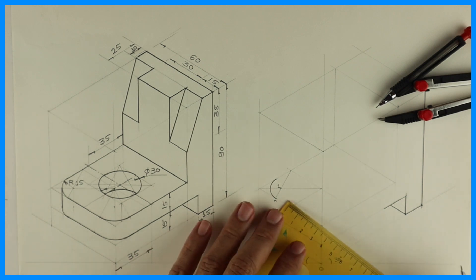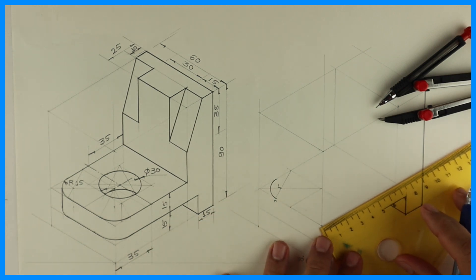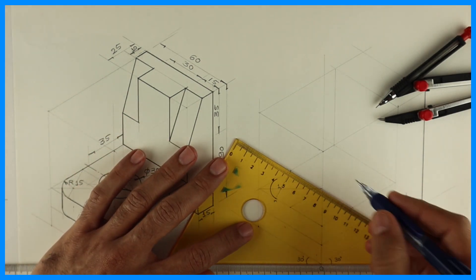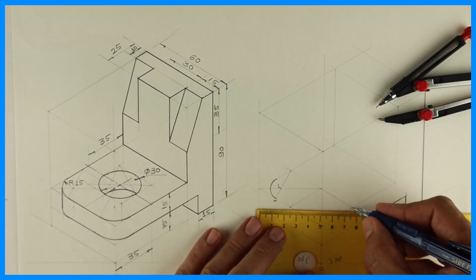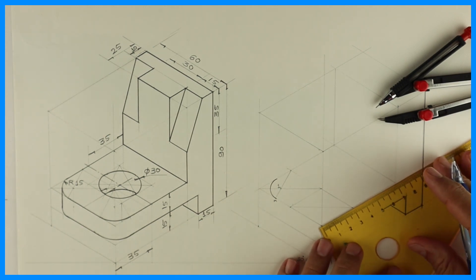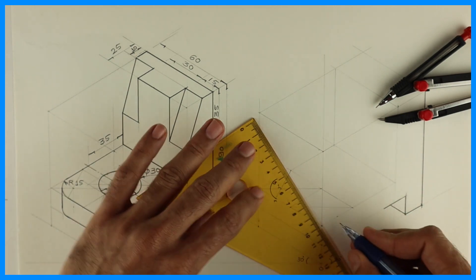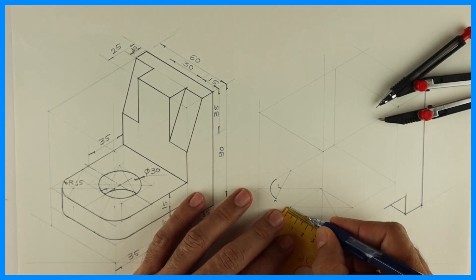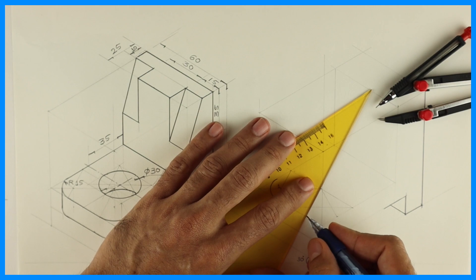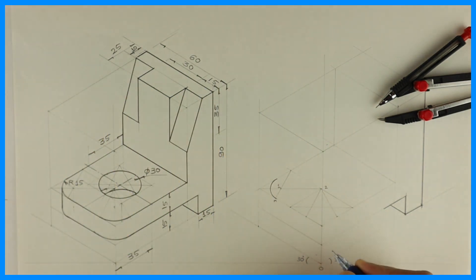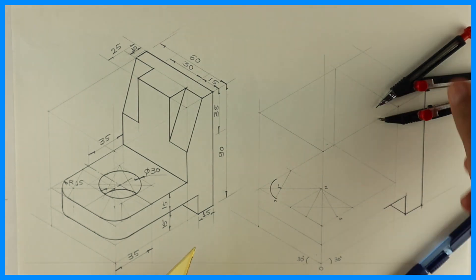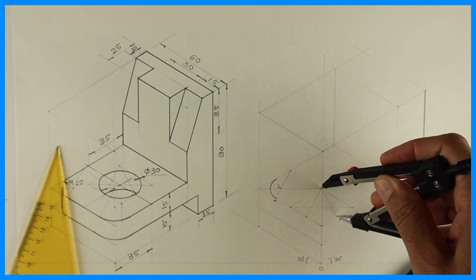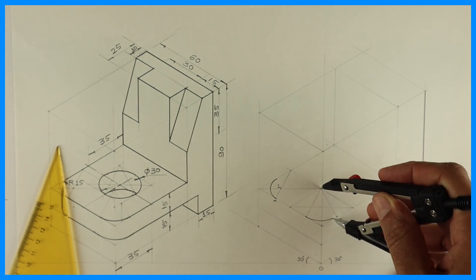Now here also we have radius 15. So again we will take 30, 30. Longest diagonal. We will mark midpoint. Join to the opposite corner. This is 0.2. This is m. So we will take 2 to m and we will draw a curve. See this.